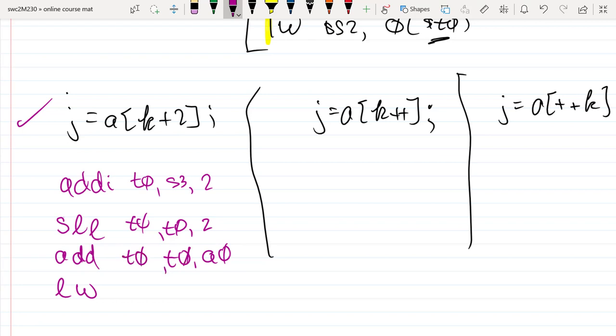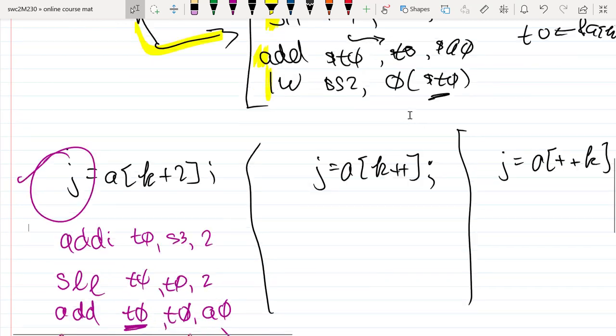And then I'm going to use that sum. I'll store it inside of t0. But I'll use that address with 0 offset and store it into register, what was that register that corresponded to j? It was s2.